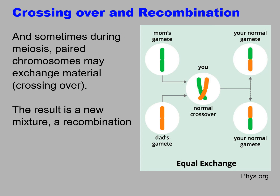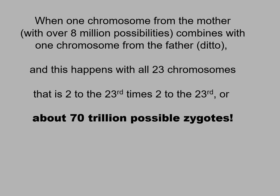Recombination sometimes occurs during meiosis, when paired chromosomes exchange material, called crossing over, and the result is a new mixture — a recombination. When one chromosome from the mother, with over 8 million possibilities, combines with one chromosome from the father, with over 8 million possibilities, and this happens with all 23 chromosomes, that is 2 to the 23rd times 2 to the 23rd, or about 70 trillion possible zygotes. In other words, you are one in a 70 trillion chance of having your genetic makeup.